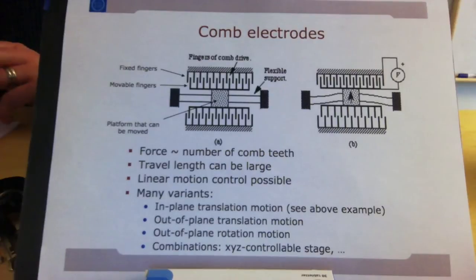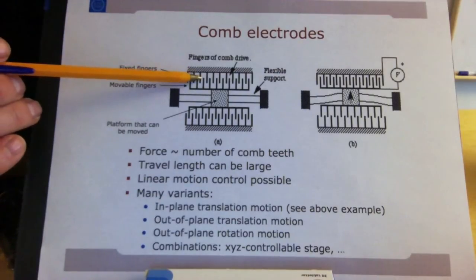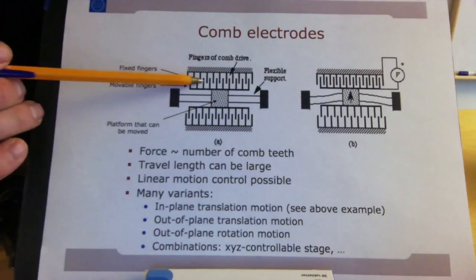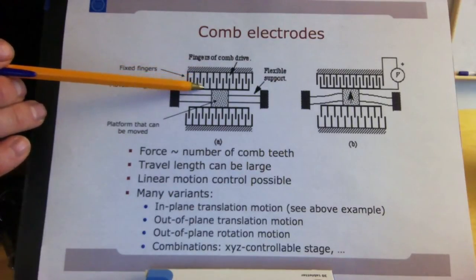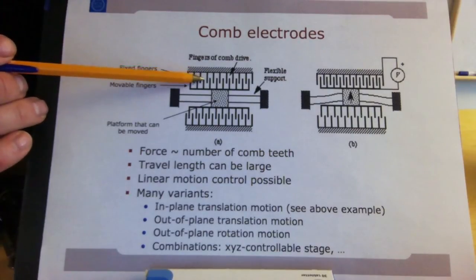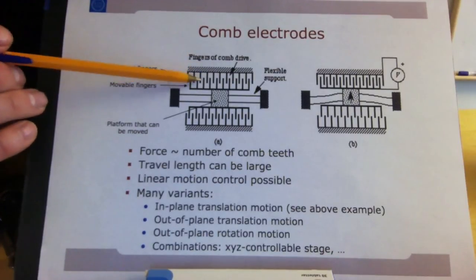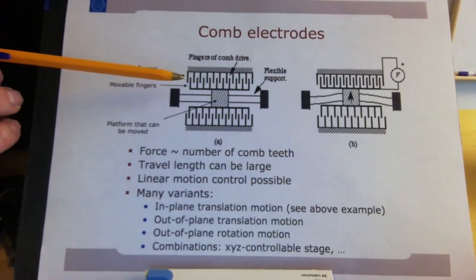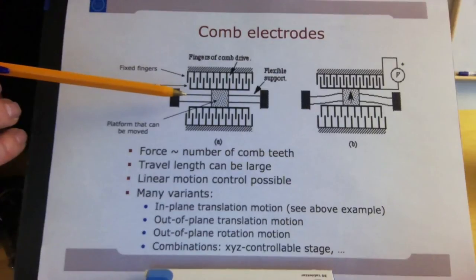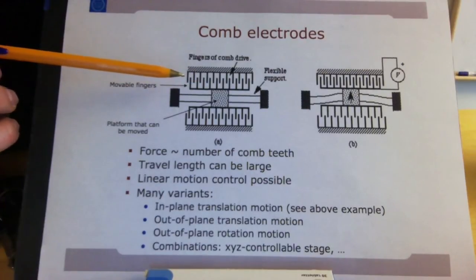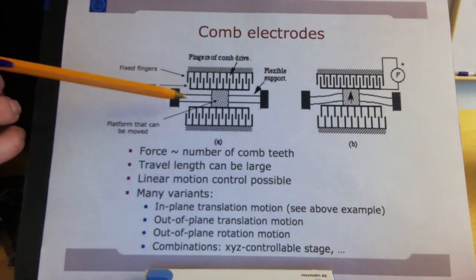A great advantage of comb drives is that you can have large travel lengths. The principle works as a capacitance — it is highest where there is overlap between the teeth, producing a high electric field. As the fingers move in further, the energy is lowered and the capacitance increases, drawing the comb in. Travel lengths are not limited anymore; you can easily achieve up to 100 micrometers with comb drives. They also allow easier linear positioning, compared to the quadratic voltage behavior of parallel plates. They can be used for in-plane movement, and also for out-of-plane movement if desired.